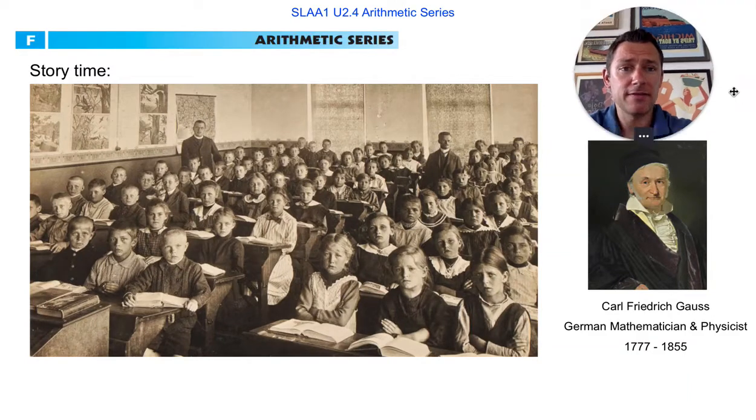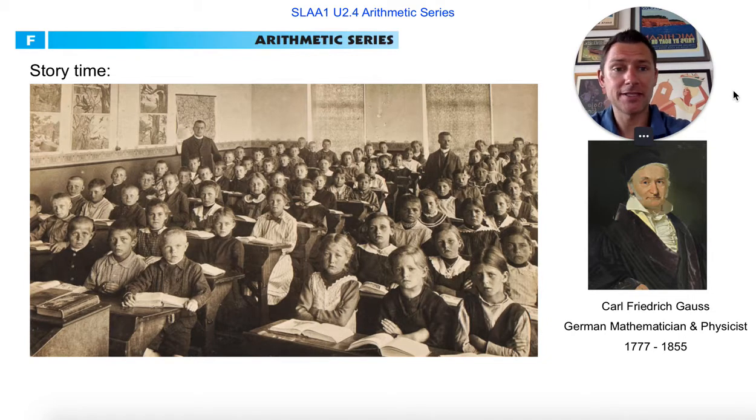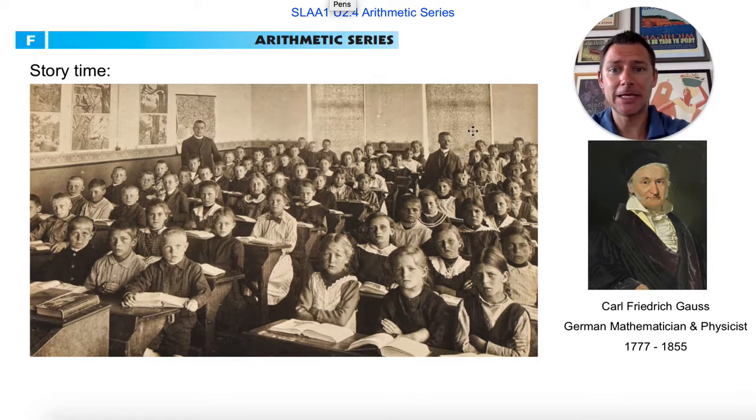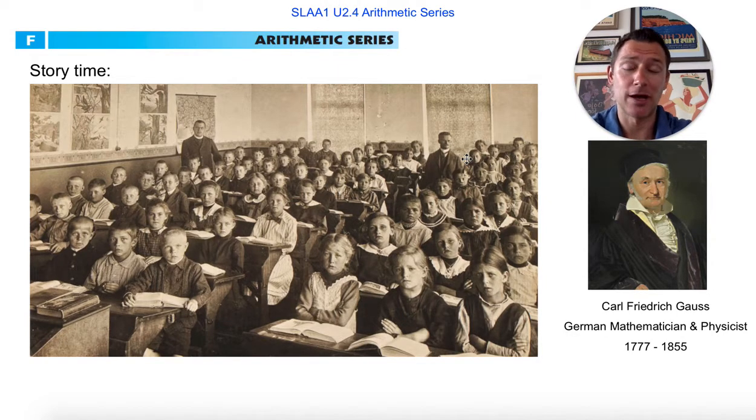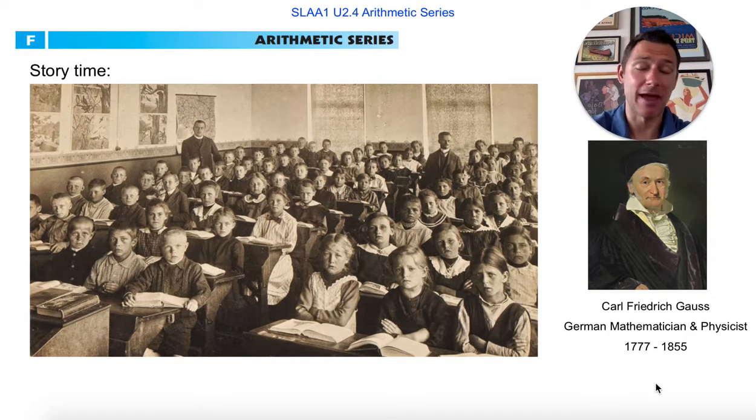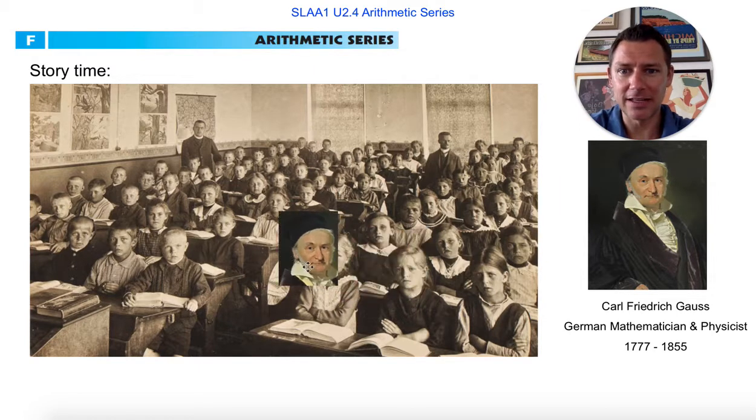Greetings, Mathies. We're looking at arithmetic series today, so adding things up, and we're gonna start the day with a little story time. Late 1700s, there's a kid named Carl Gauss, who ends up being this old dude, became a brilliant mathematician-physicist.